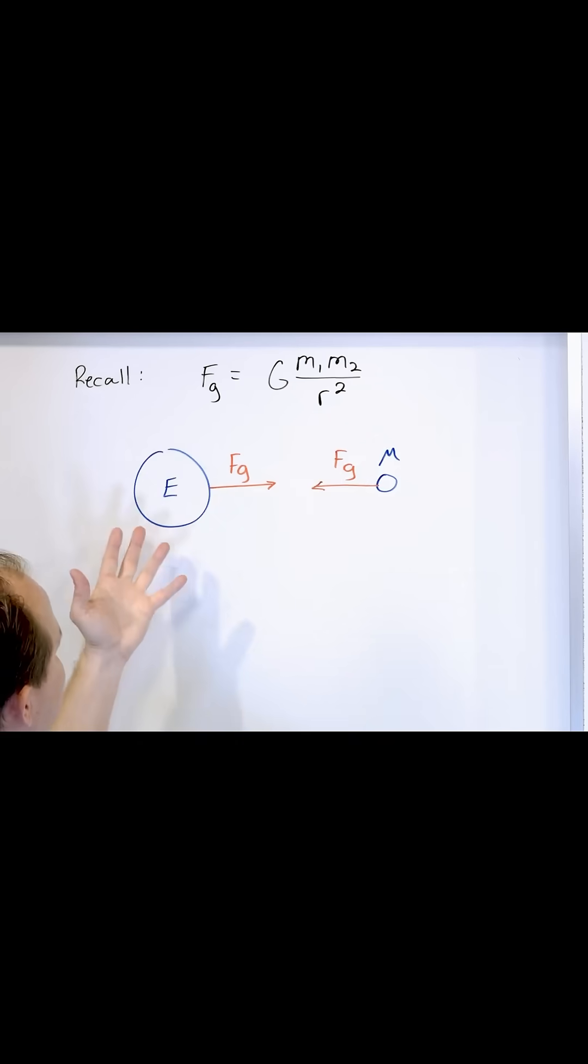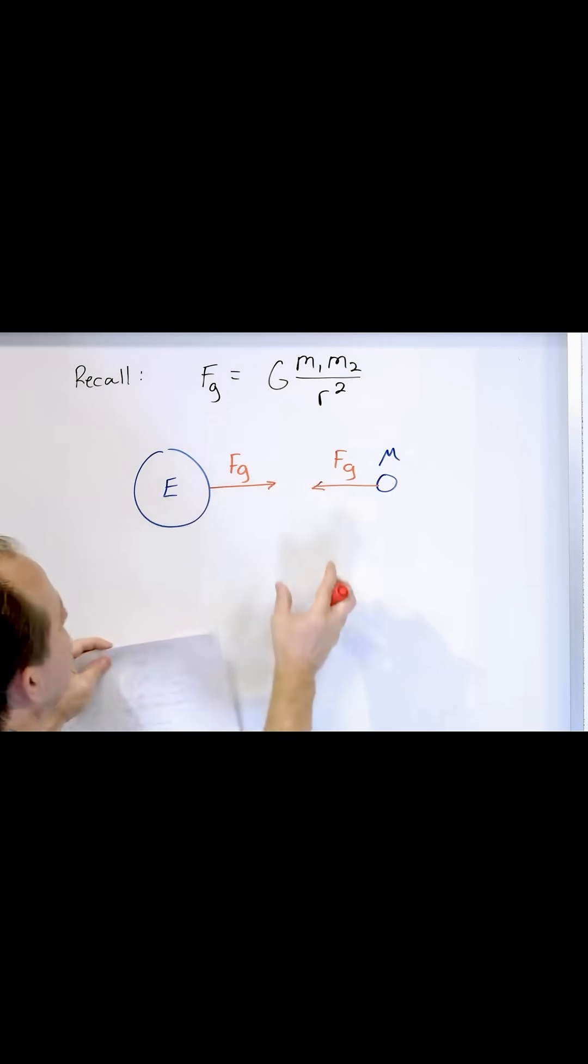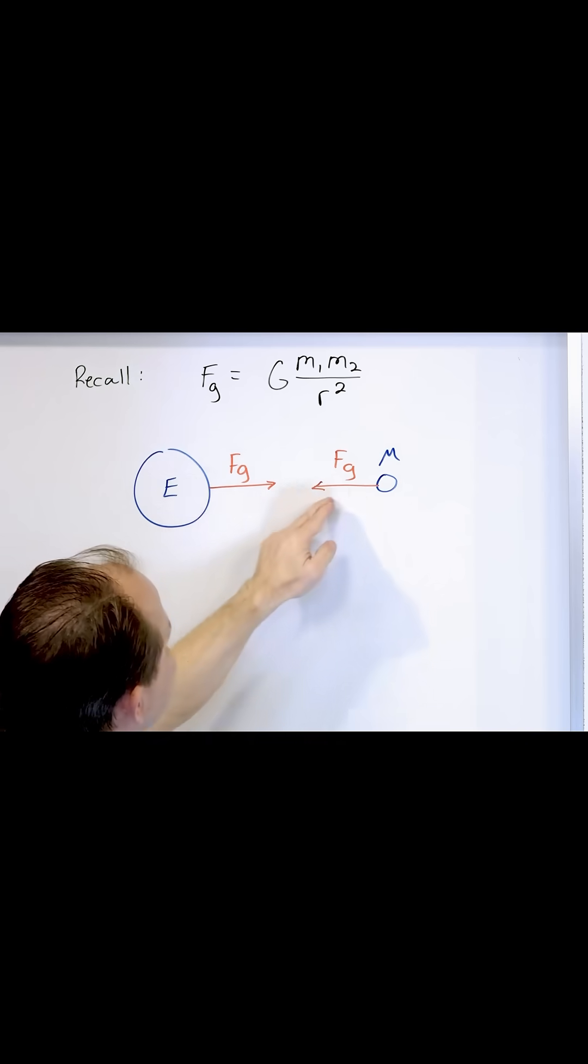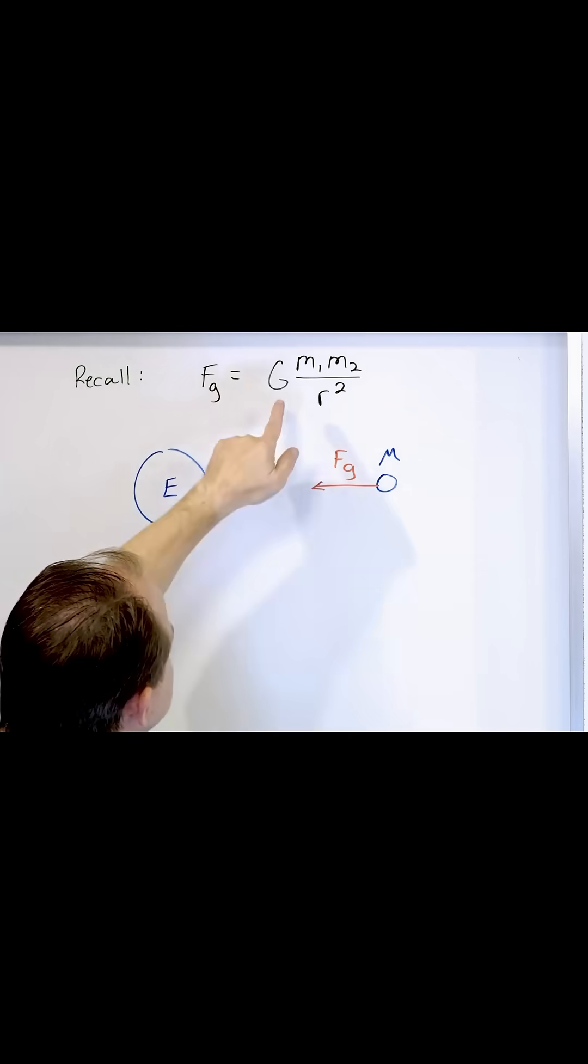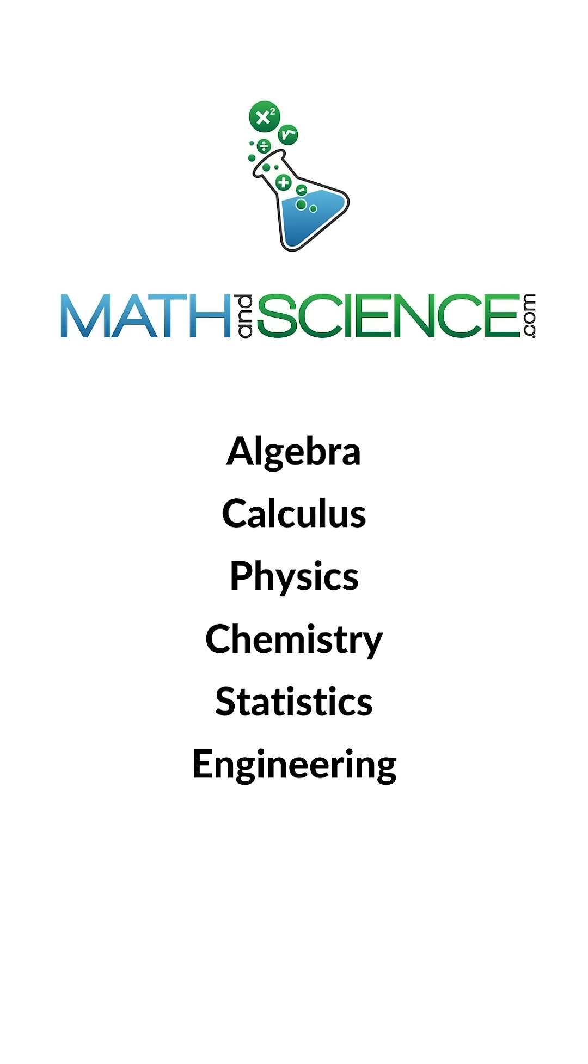If we have two bodies acting gravitationally, we have a force of the Earth pulling on the Moon, and the Moon is pulling on the Earth. But the forces are actually the exact same strength and along the same line of action because the force is governed by the multiplication of the two masses involved.